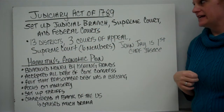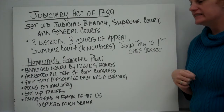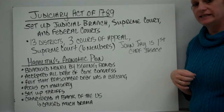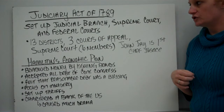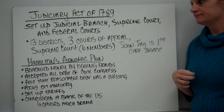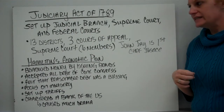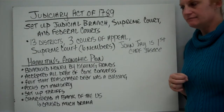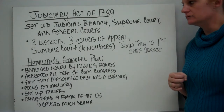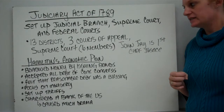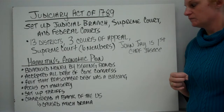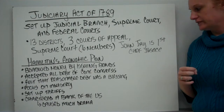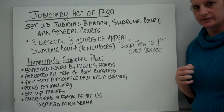The Judiciary Act of 1789 set up the judicial branch, the Supreme Court, and the federal courts. There were 13 districts set up, one for each state, three courts of appeal, and the Supreme Court, which had six members. John Jay was chosen as the first chief justice.